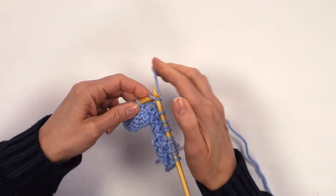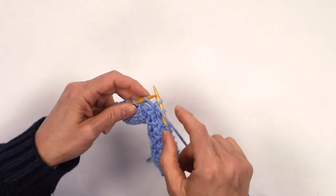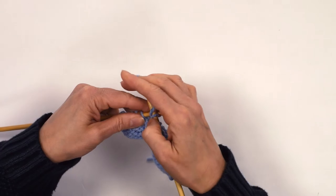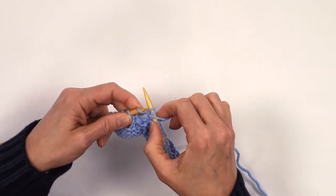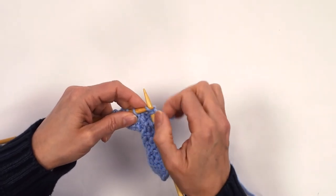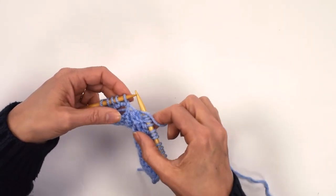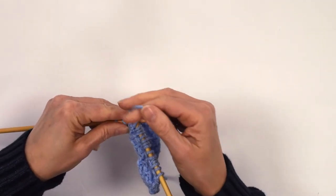Once more, so knit, don't slip it off, bring the yarn between the needles, purl, take the yarn back between the needles, knit, and then purl three together.